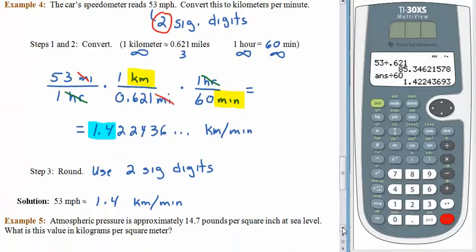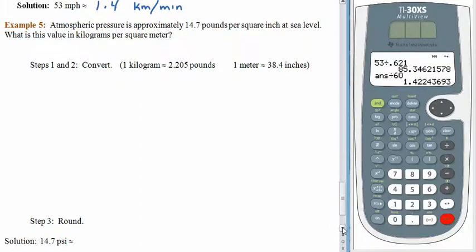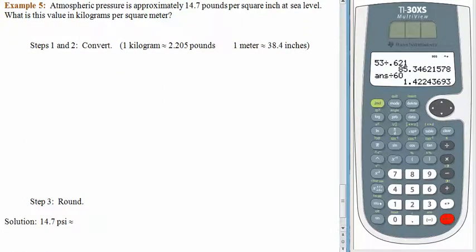This last example is all here waiting for you. Atmospheric pressure is approximately 14.7 pounds per square inch at sea level. We'd like to know what atmospheric pressure is if we use kilograms per square meter. And I'm not even going to start any of this for you. Pause the recording, work it all out on your own, and then come back when you are ready.